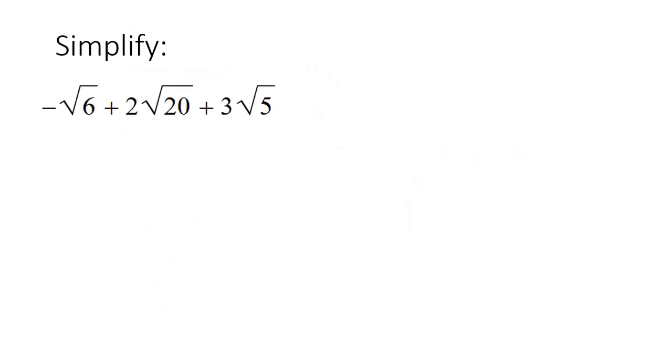So here's our first one. Now, at the moment, you cannot do anything. The reason is that these inside parts are not the same. So what we need to do is go ahead and simplify each part as much as possible. So I hope you've watched my previous lesson where I showed you how to simplify radicals. So let's look at this first one, square root six.